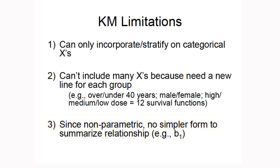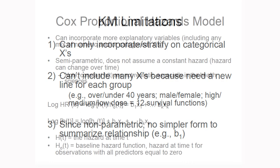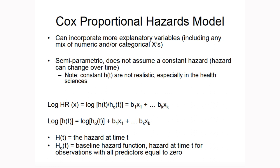So what if we want to control for other factors that may confound the association between age and survival, including continuous variables? And what if we want to summarize the relationship between age and survival in a simpler form? Kaplan-Meier is not a regression model, so we need to use another method that allows us to summarize the relationship between age and survival, controlling for potential confounders. This brings us to Cox proportional hazards regression. A Kaplan-Meier analysis is a good starting point — useful for initial exploration and simpler datasets where you don't need to adjust for many variables — but if we want to control for other factors, we need Cox proportional hazards regression.